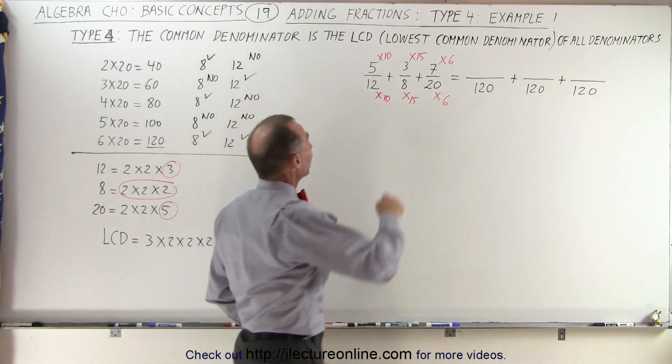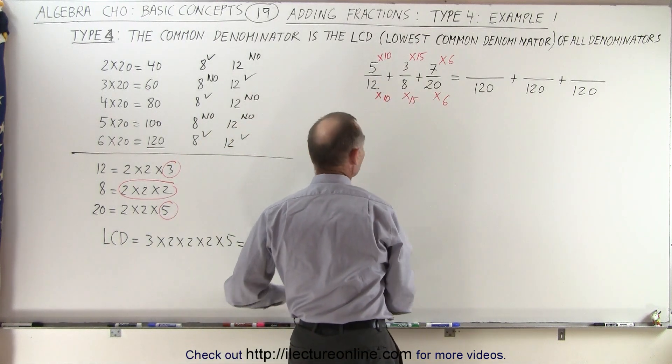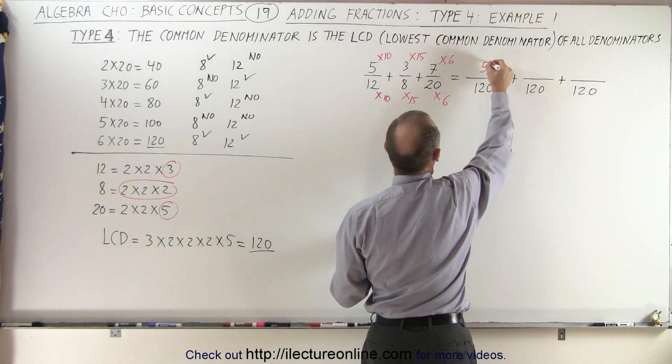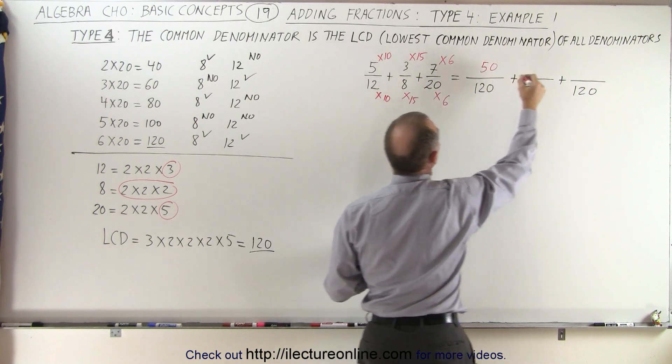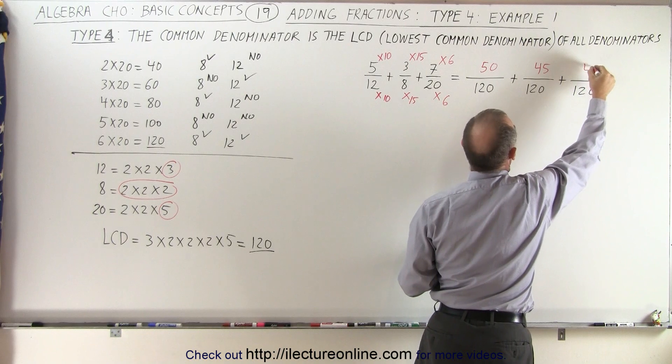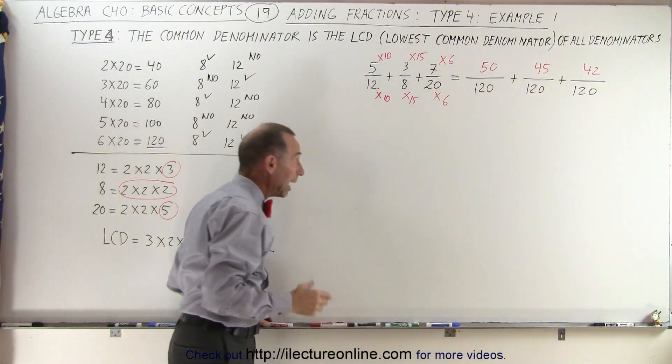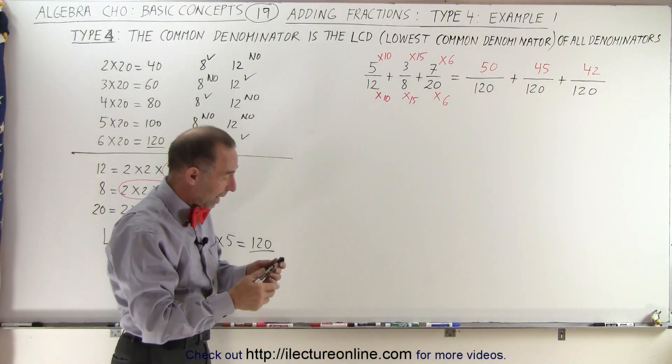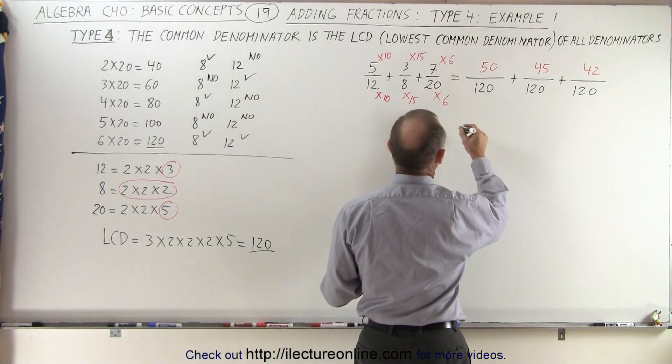So that means that we have 5 times 10, that gives us 50 as our new numerator, 3 times 15, which is 45, and 6 times 7, which is 42. And now we can go ahead and add all the numerators since we have one common denominator of 120.